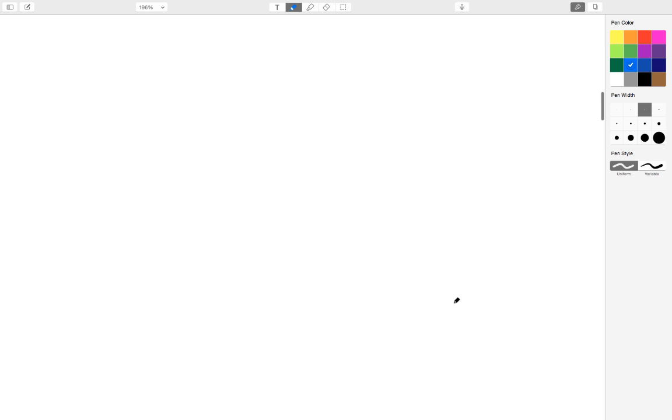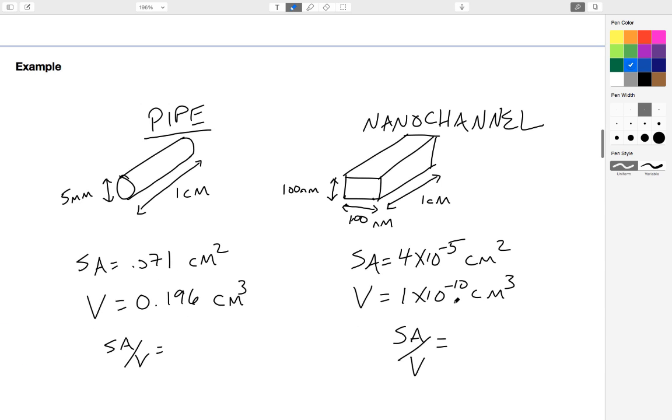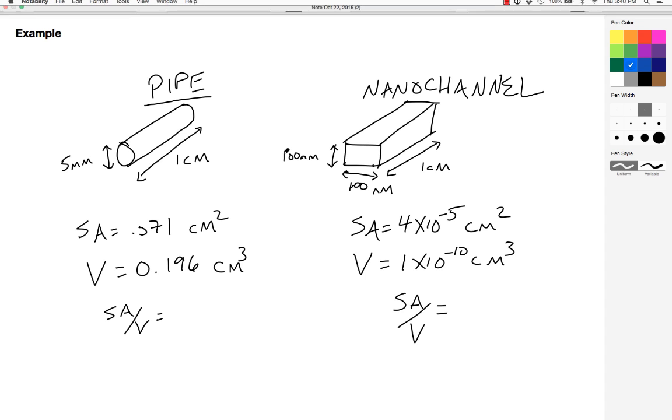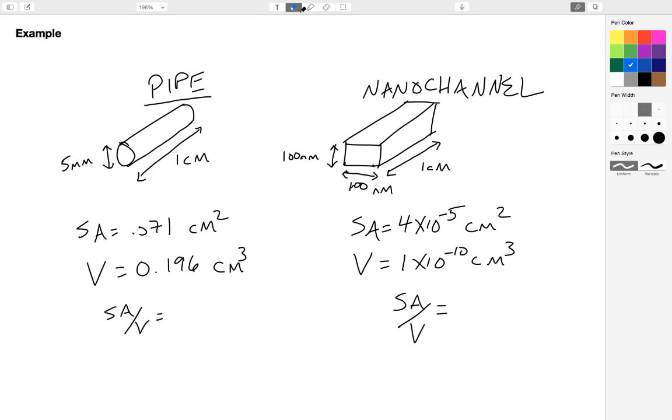So let's take another look at a more relevant example. I have here two systems. One system is a macroscale pipe, so this might be a pipe carrying water. It's 5 millimeters in diameter, so still fairly small but certainly not nanoscale, and 1 centimeter long.